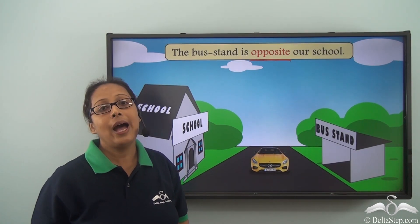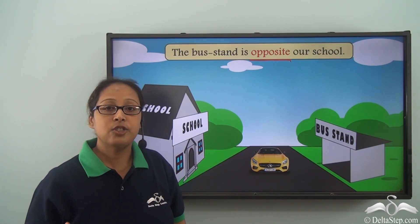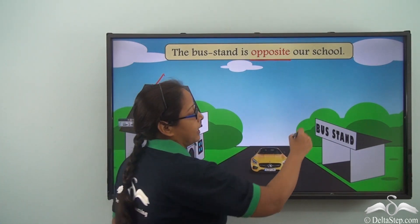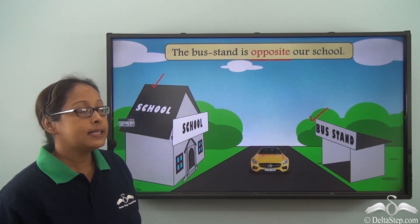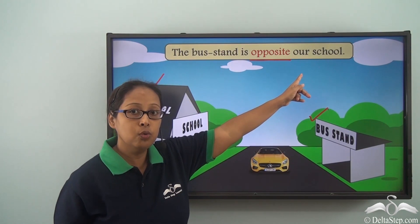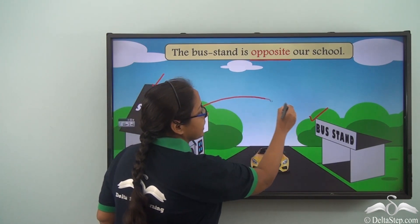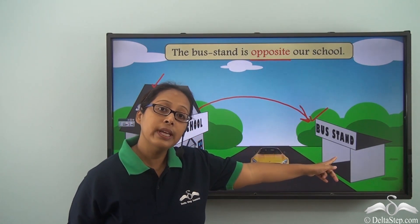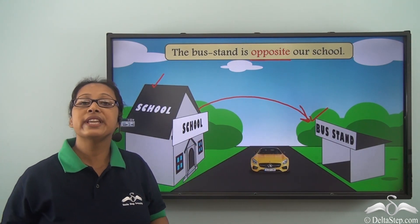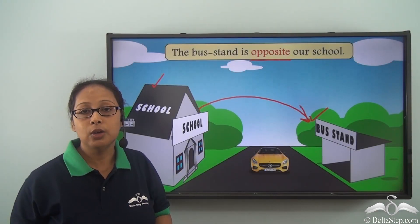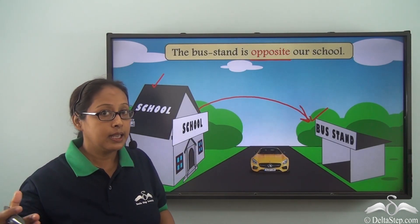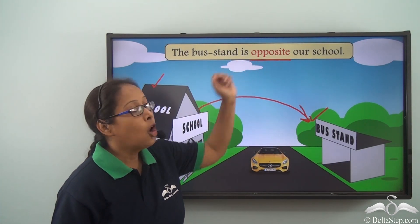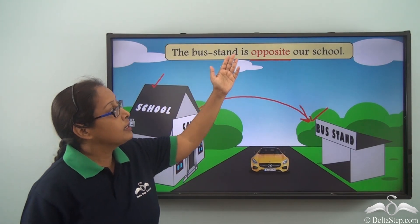Now opposite also has a separate meaning. Let's check that out. Looking at the picture, this is the school and here is the bastan. When I say the bastan is opposite our school, we can see directly that from the school the bastan is on the other side. When we use prepositions which talk about something being on the other side or something completely different, we use the preposition opposite. So the bastan is opposite our school.